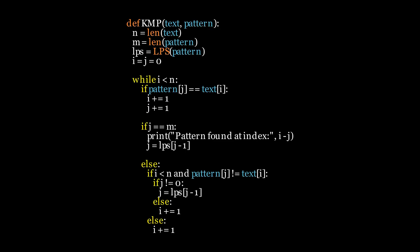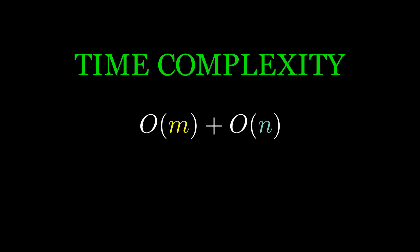This is the code for the algorithm. It only contains one loop, so the time complexity is linear. The overall algorithm takes linear time complexity, O of m to find the LPS table, and O of n to perform the matching, so the final complexity is O of M plus N.